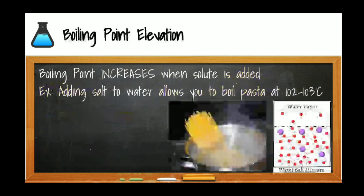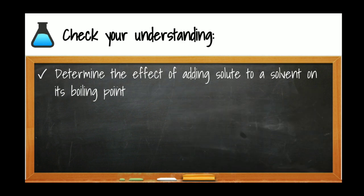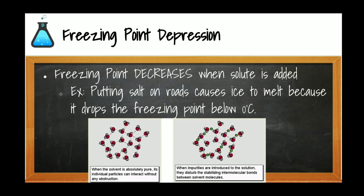There are two colligative properties we will examine. The first is called boiling point elevation — the boiling point of a solution increases when a solute is added. For instance, we add salt to water before boiling it to increase the boiling temperature. Normal water boils at 100°C, but salted water boils at 102°C. Hotter water means pasta cooks faster.